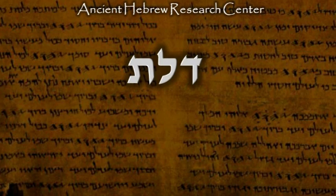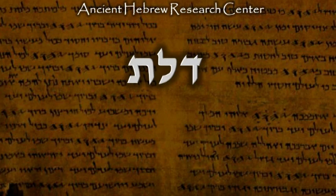The name of the fourth letter in the Hebrew alphabet is Dalet. The Greek name for this letter is Delta, derived from the Hebrew name. But the Arabic name is Dal, suggesting the possibility that the original name of this letter was Dal and not Dalet.